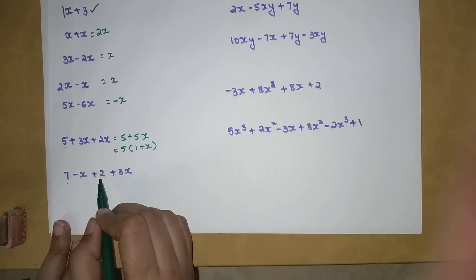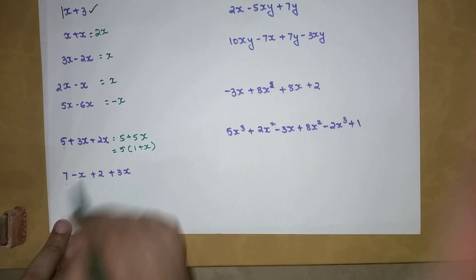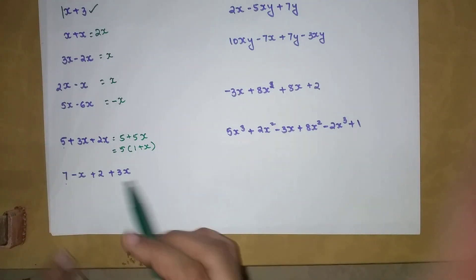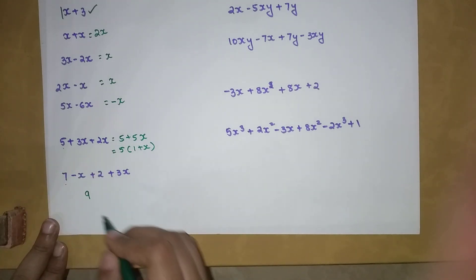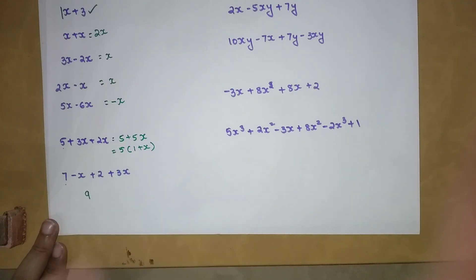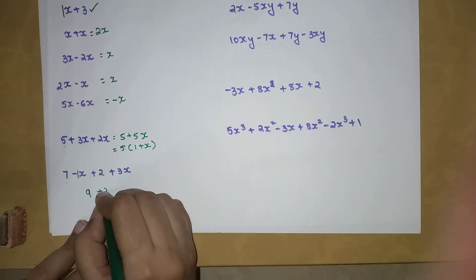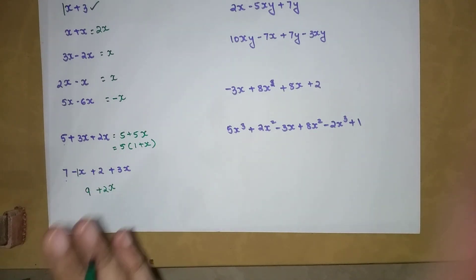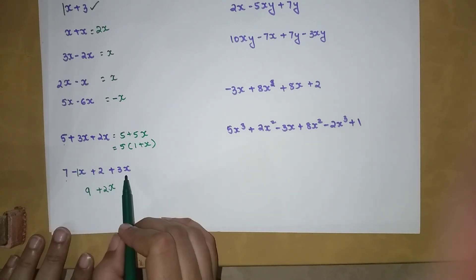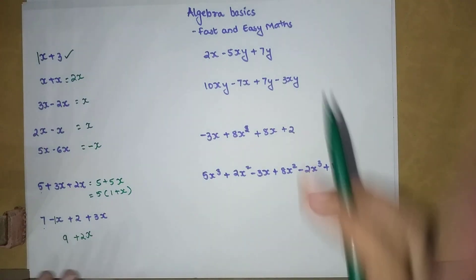Now here we have 7 plus (minus x) plus 2 plus 3x. First, handle the constants — 7 and 2 both have a plus sign, so we add them to get 9. Then for the variable terms: 3x minus x is 3 minus 1 equals 2x. So the answer is 9 plus 2x. Always do operations on coefficients and constants separately — you cannot mix them.